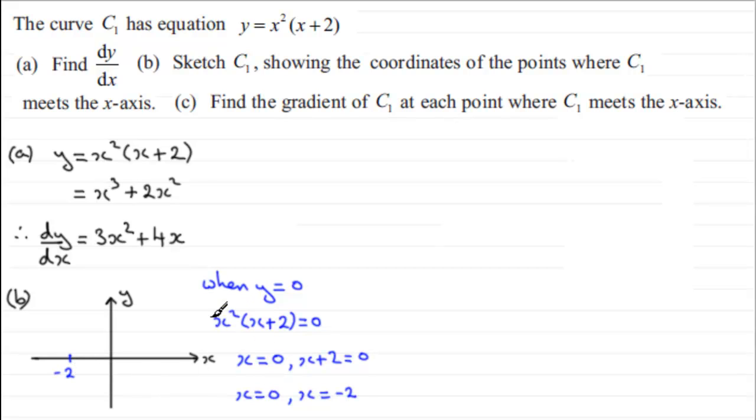Now because x could equal 0, or 0 again, it's what we call a repeated root, then this is a sign that when you have a repeated root, that the curve, instead of it crossing the x-axis, it touches the x-axis. So it's going to touch the x-axis at 0.